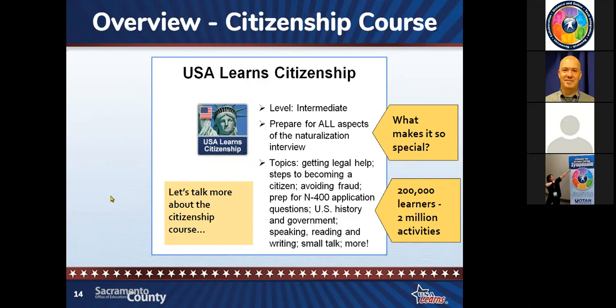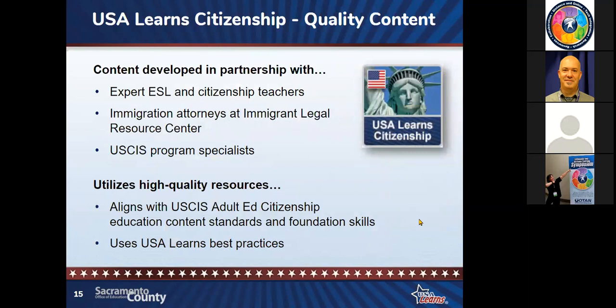About 200,000 learners have completed 2 million activities since the citizenship course launched. This course has very high quality content. It was developed in partnership with expert ESL and citizenship teachers. We also worked closely with immigration attorneys at the Immigrant Legal Resource Center and the United States Citizenship and Immigration Services Program Specialists both in Washington D.C. and in Sacramento. This course utilizes resources that align with the USCIS adult education citizenship content standards and foundation skills, and we used USA Learns best practices — after 13 million people have visited your website, you know where they get stuck and what's easy or confusing for folks.